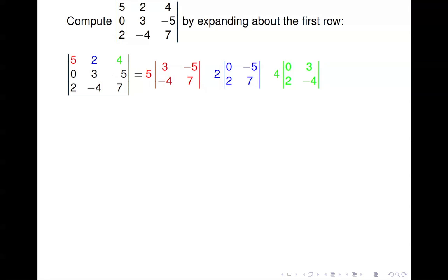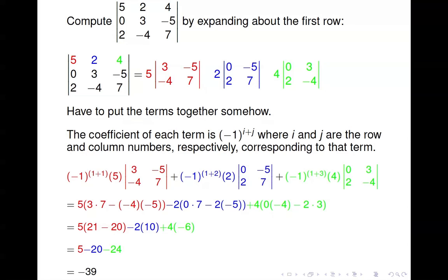We apply a coefficient of negative 1 to the i plus j to each term, where i and j are the row and column indices. The 5 came from row 1, column 1, so its coefficient is negative 1 to the 1 plus 1. For the 2, which is in row 1, column 2, the coefficient is negative 1 to the 1 plus 2.